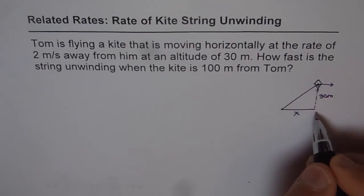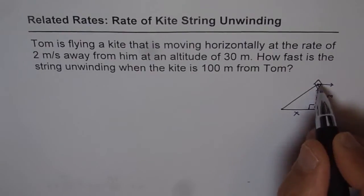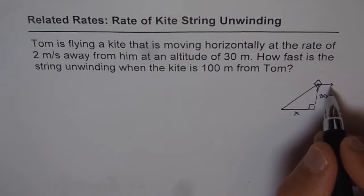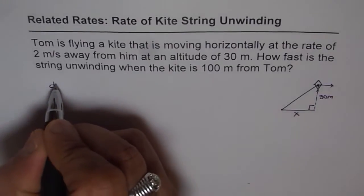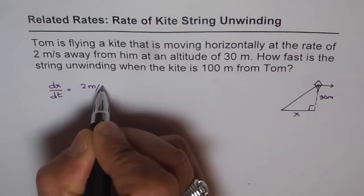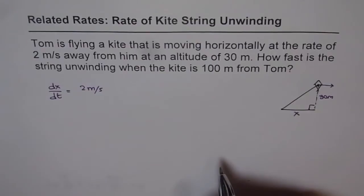So what we notice here is this is a right triangle. In this triangle, height is not changing, y value is not changing, only x value is changing. And the rate at which it is changing is given to us, which is dx/dt equals 2 meters per second. As it is increasing, moving away, we are taking it as positive.